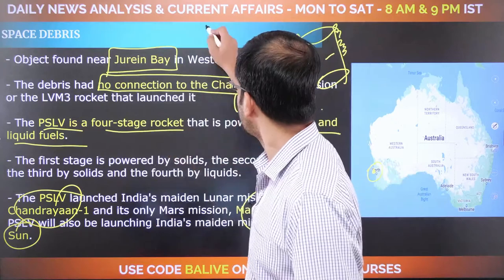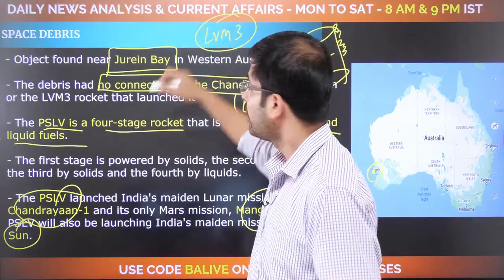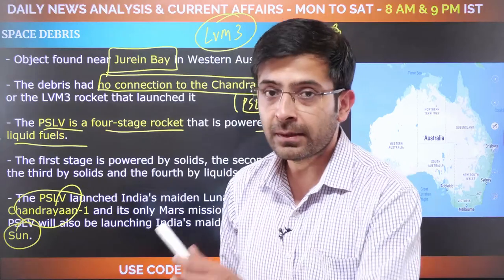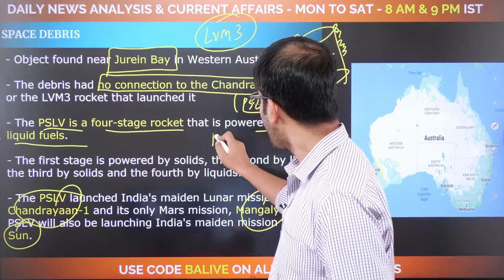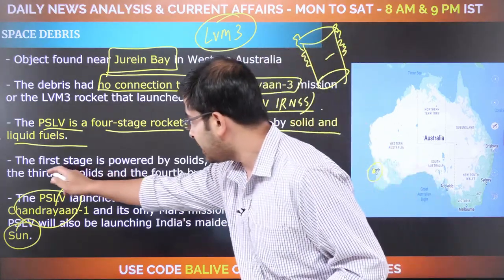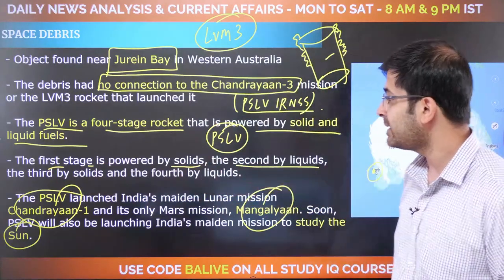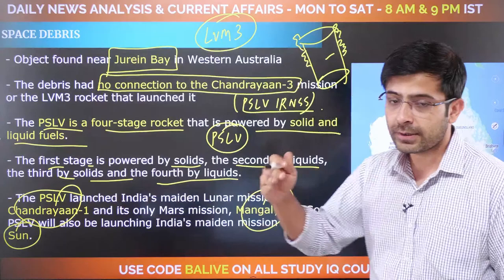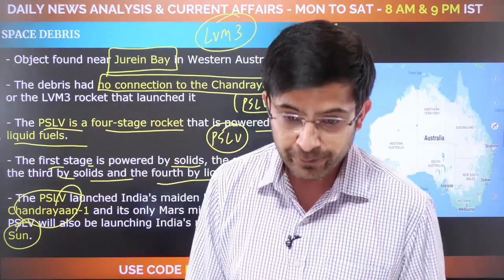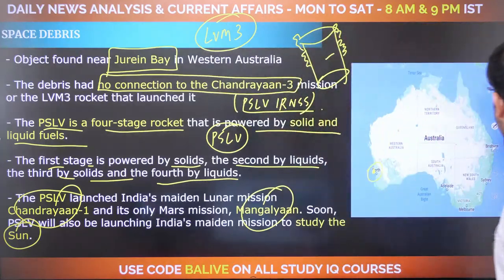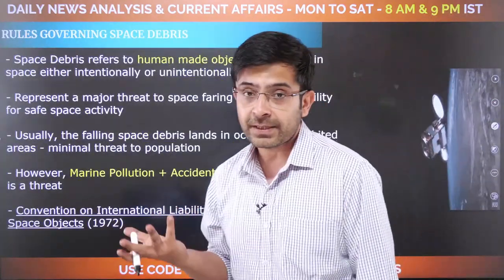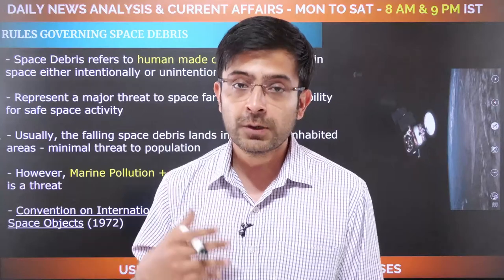Chandrayaan-3 used LVM-3; the sun mission proposed for August 26th will use PSLV. Now, what happens when you blast off a rocket in space and it hits another NASA satellite? Are you responsible? Absolutely. Similar to plastic pollution and extended producer responsibility — your responsibility for the plastic does not end by merely selling it. It is still your responsibility to process, recycle, and safely dispose of it. That is extended producer responsibility, where your responsibility goes beyond just the first part.